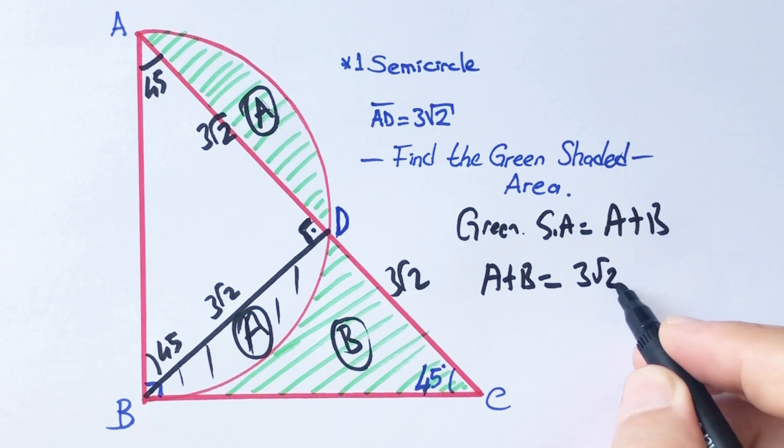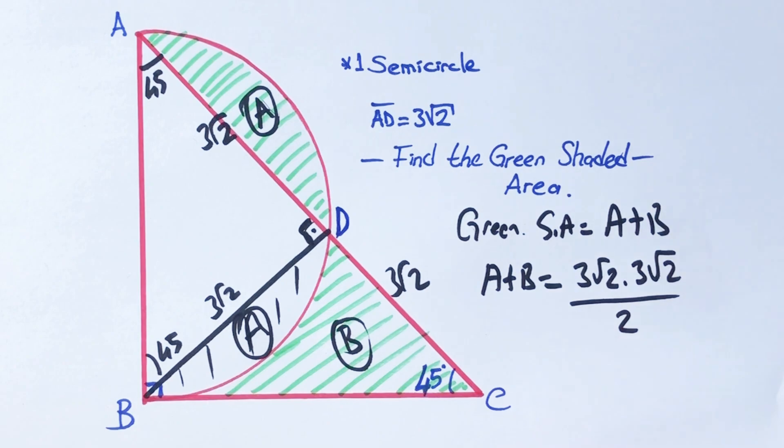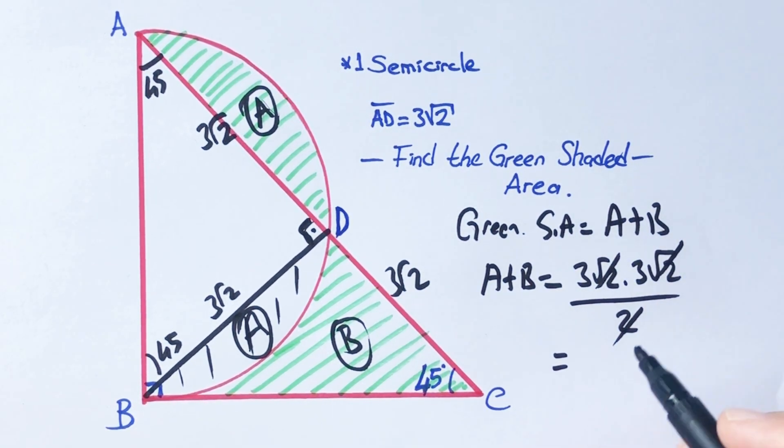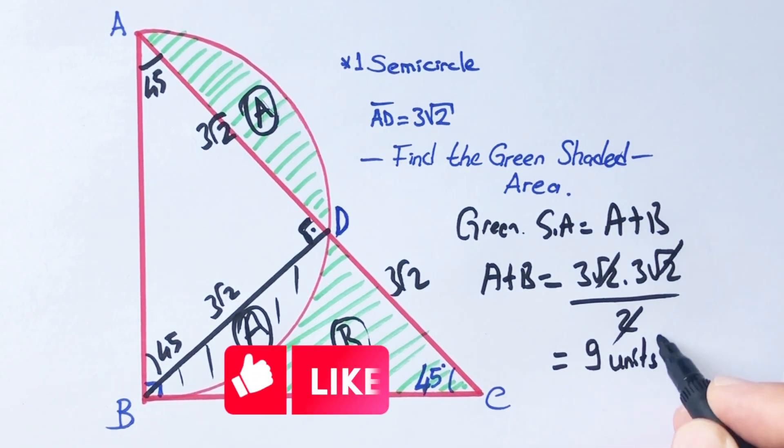So 3√2 times 3√2 over 2 equals the green shaded area, which is 9 square units.